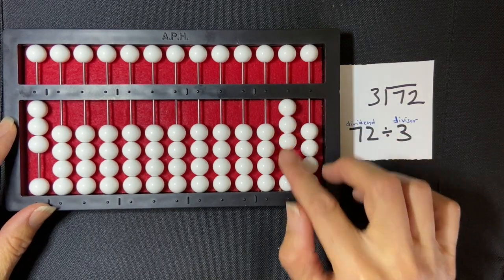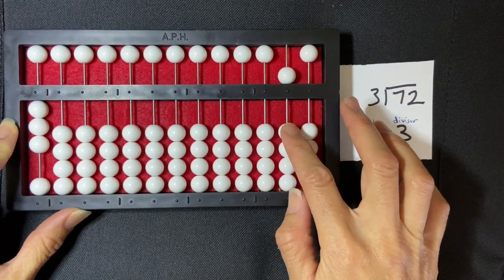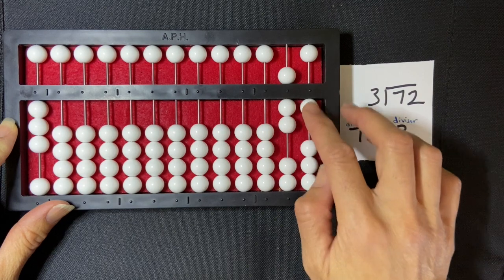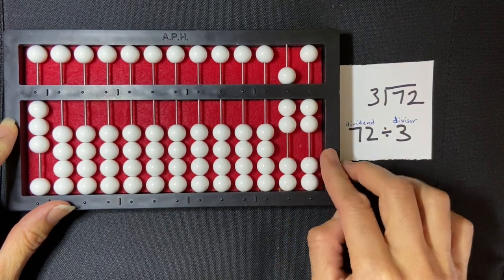One, two, three, four, five. I do my four-five exchange. Six, seven. One, two. Seventy-two.